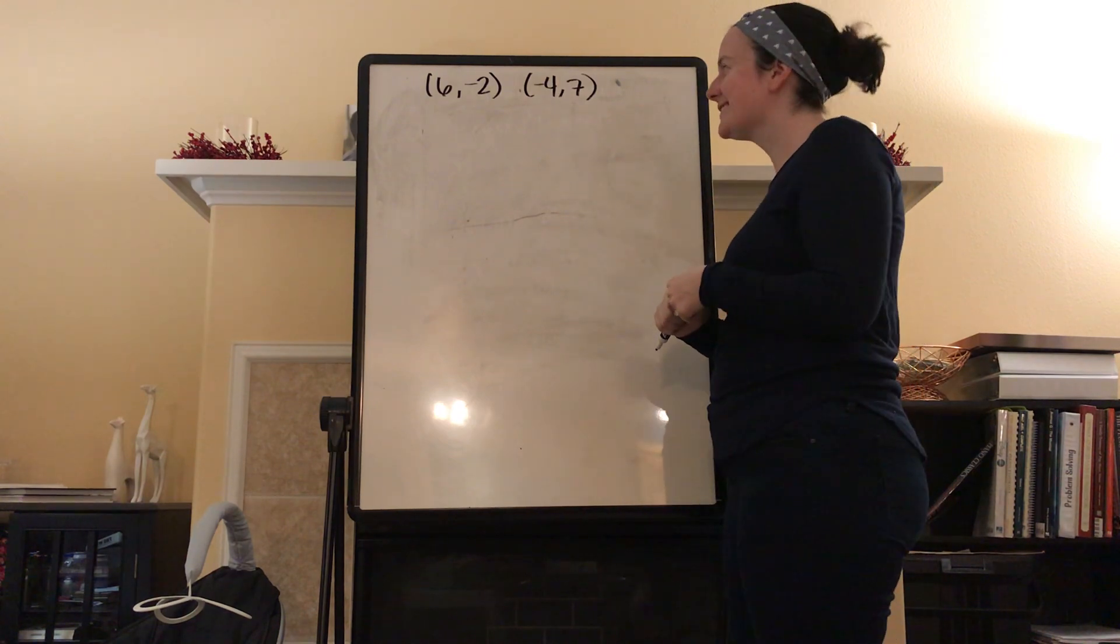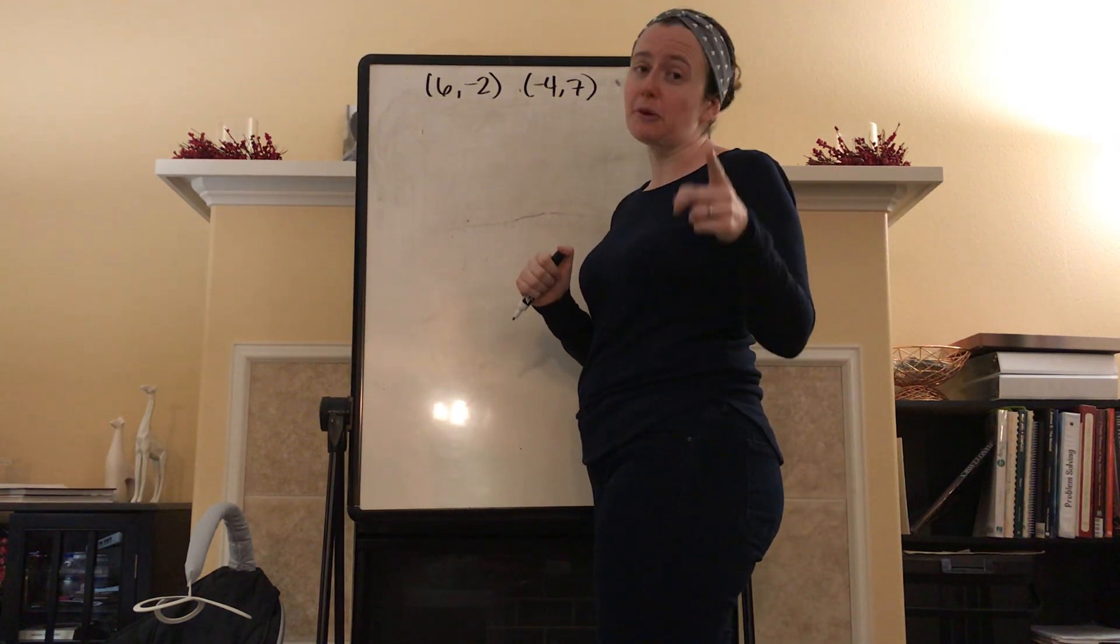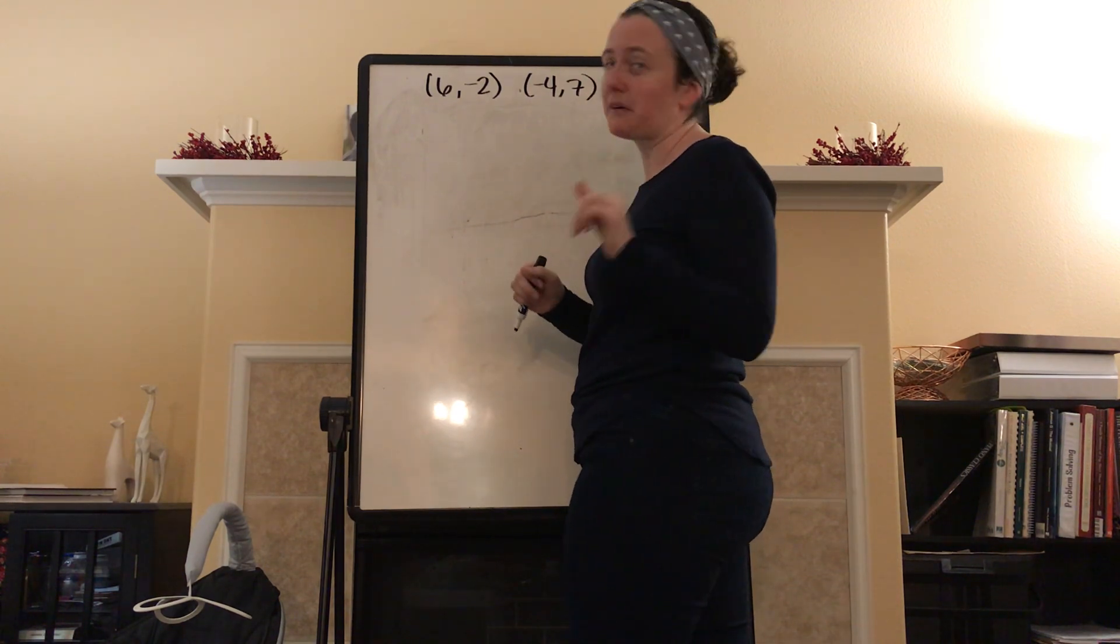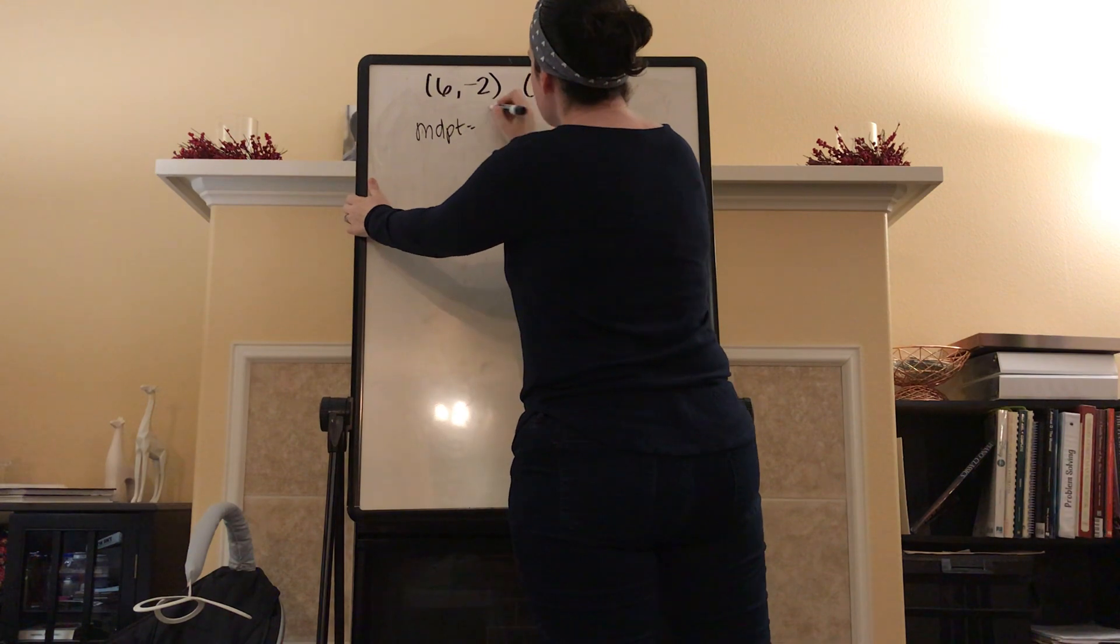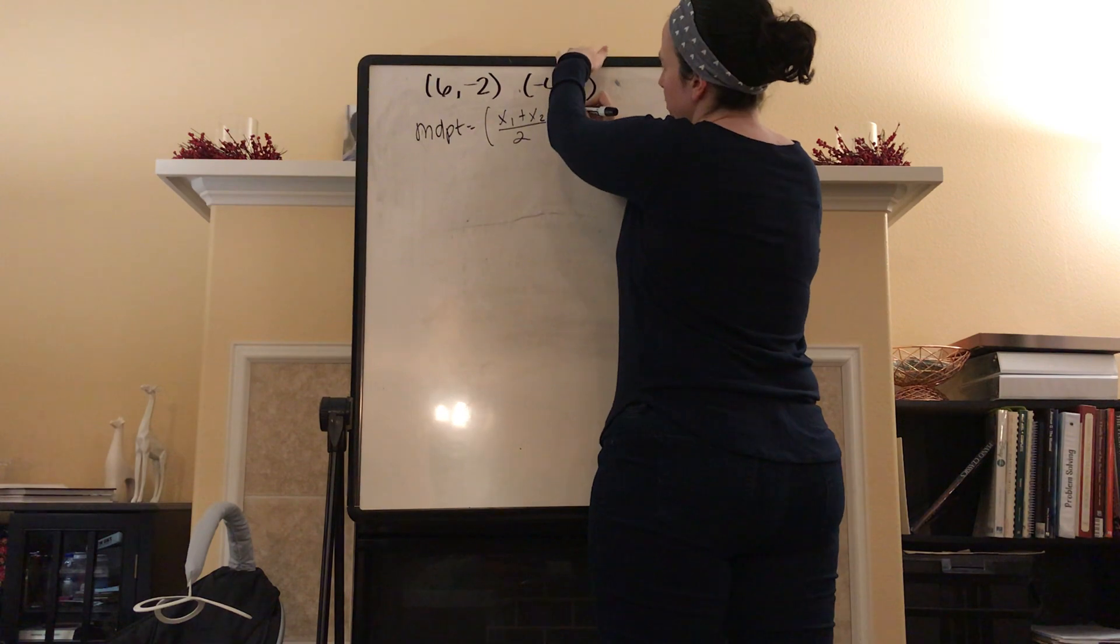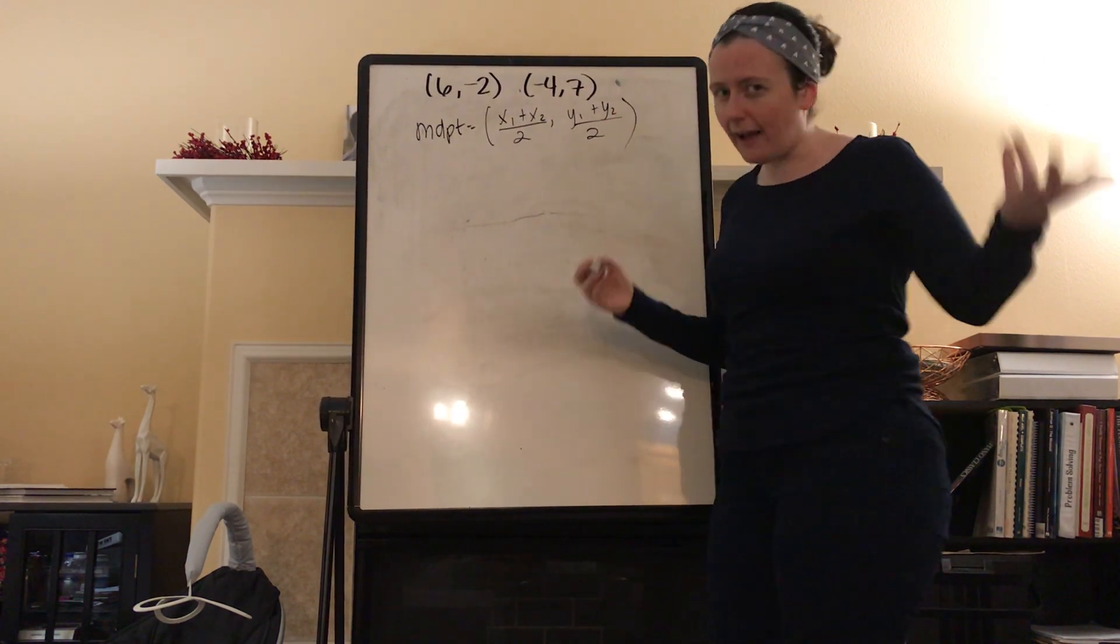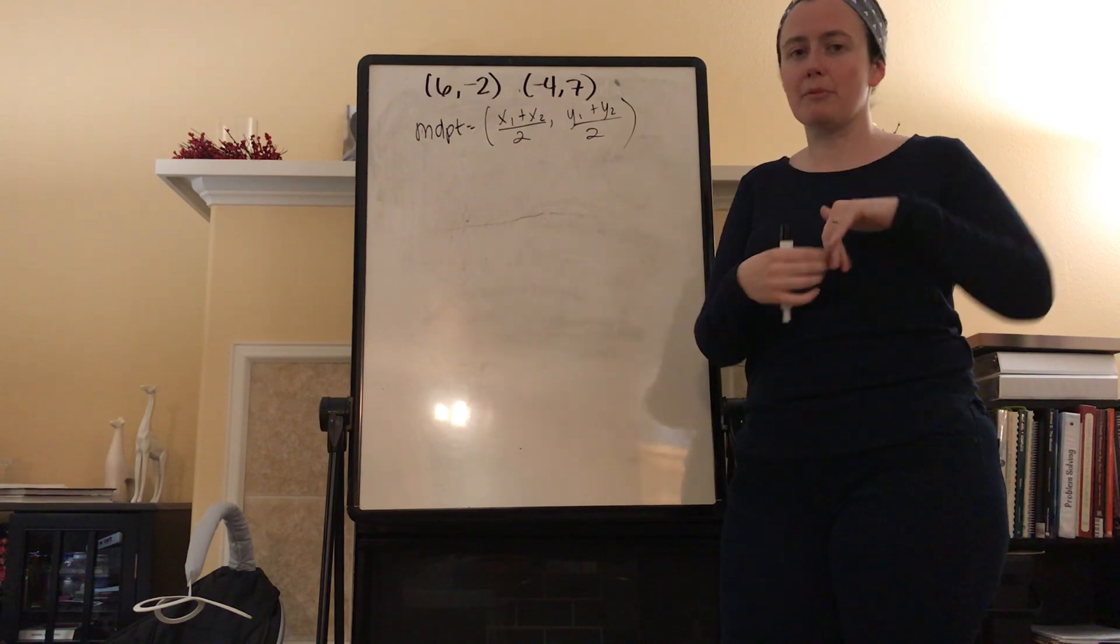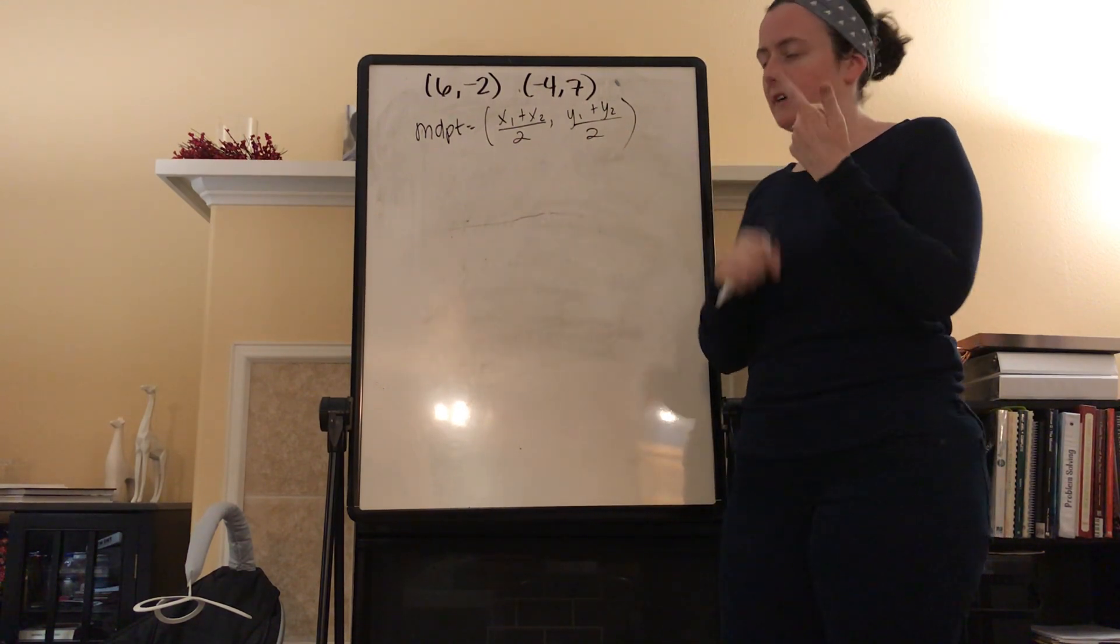Man, you're so entertained by this right now, I hope. As entertained as my husband is behind me filming. Thoroughly entertained. So your midpoint formula is equal to your X's added together and divided by 2. Your Y's added together and divided by 2. Average, right? Add them all up. Divide by the number that there are. You have two X's. Add them up. Divide by 2. You have two Y's. Add them up. Divide by 2.